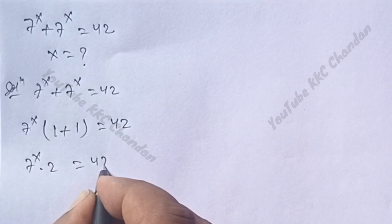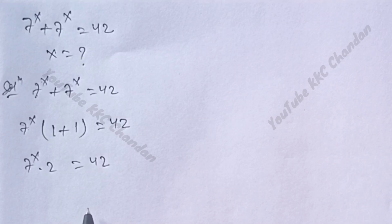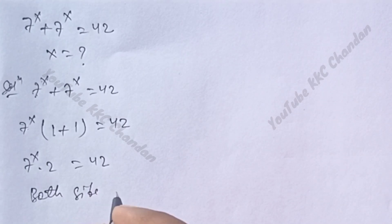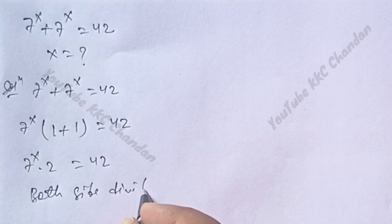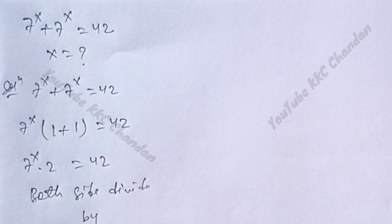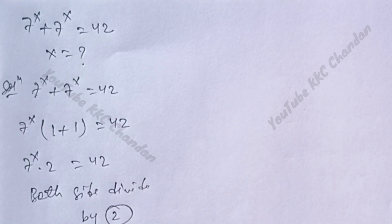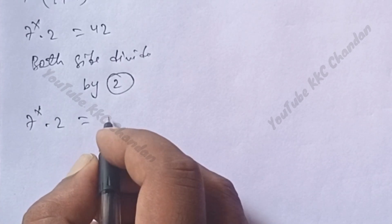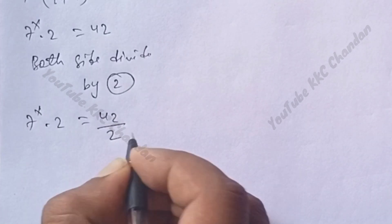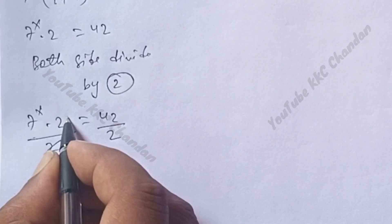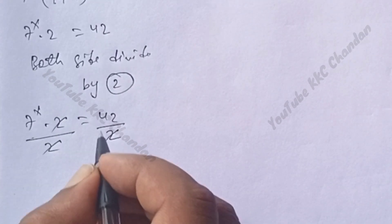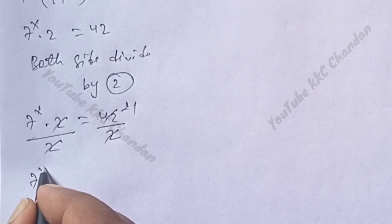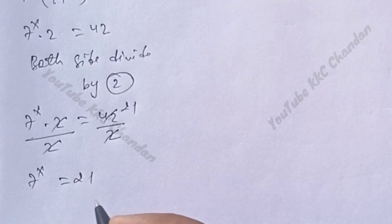So 7 power x into 2 is equal to 42. Dividing both sides by 2, the 2 cancels and we get 7 power x is equal to 21.